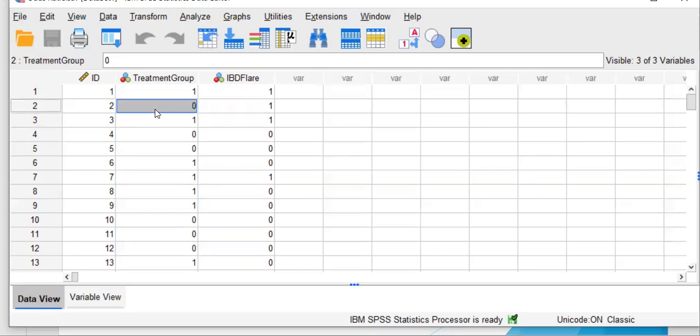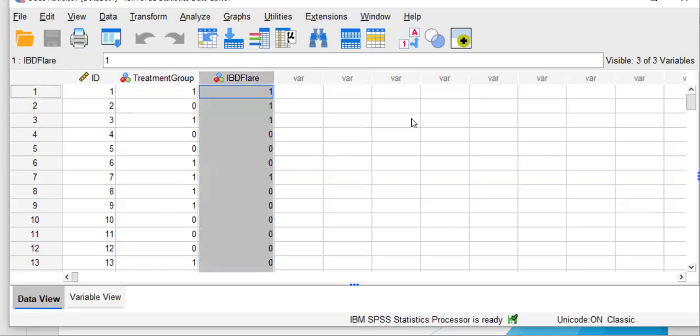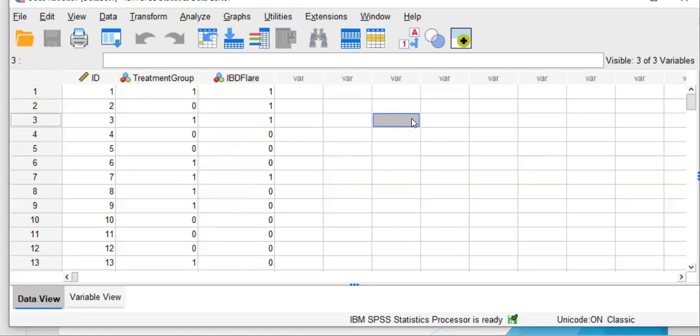You have treatment group, radiation treatment, yes or no, and IBD flare, presence of IBD flare post-treatment, yes or no. So the null hypothesis is there is no association between radiation treatment and IBD flares among persons with IBD and prostate cancer.